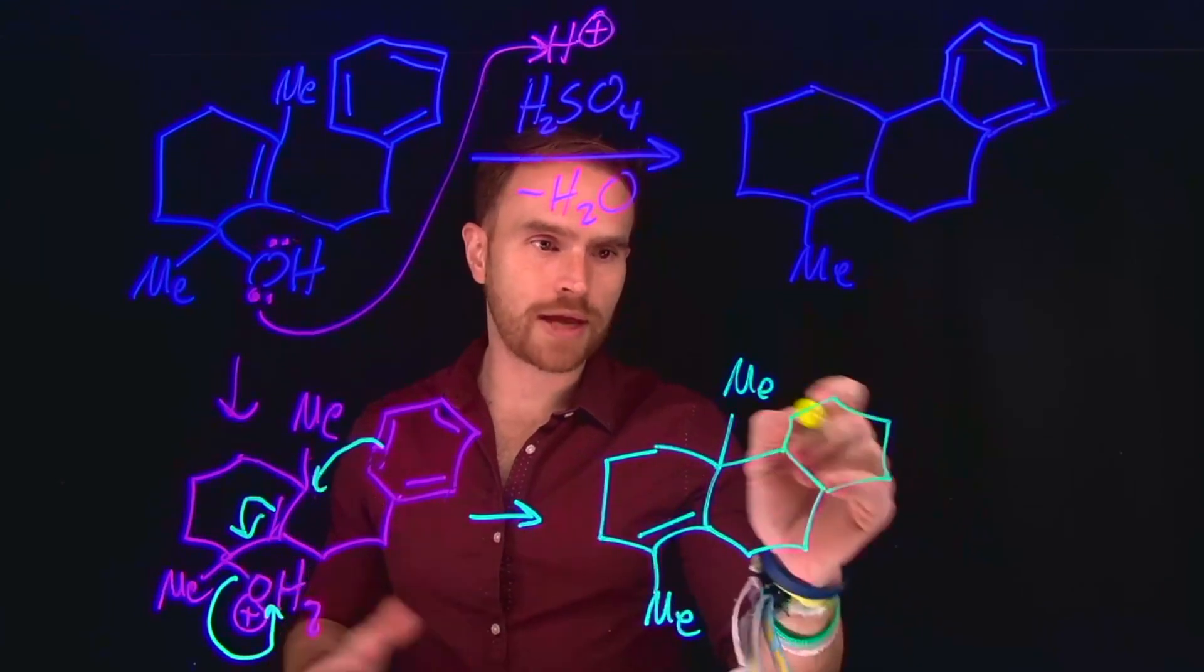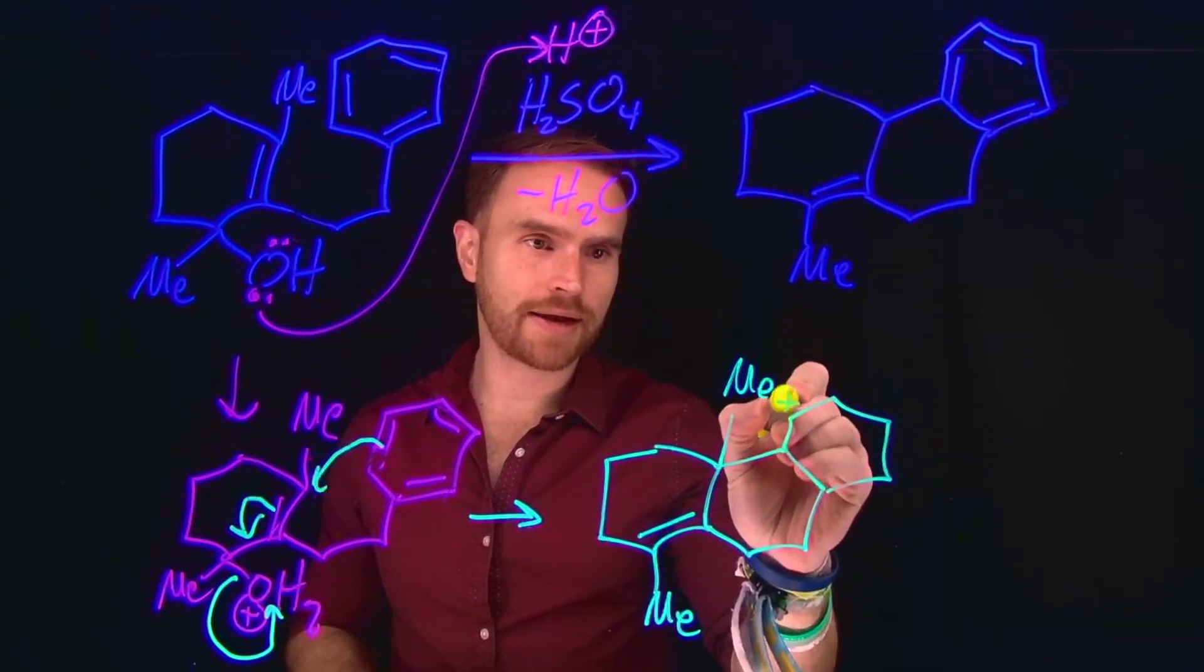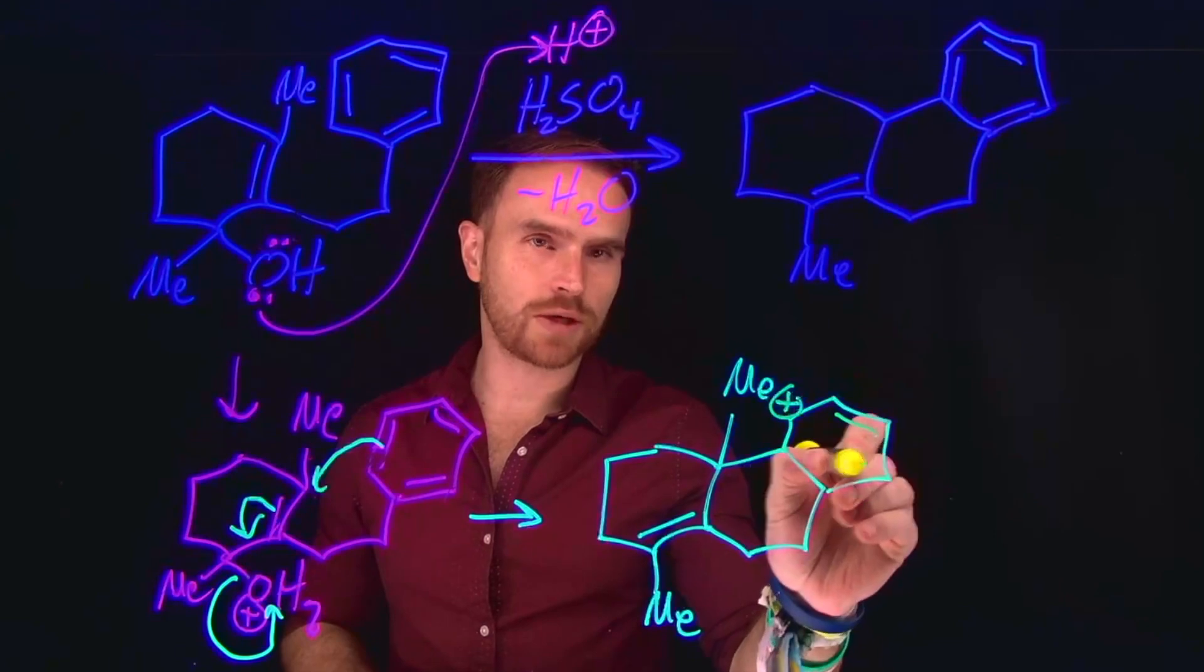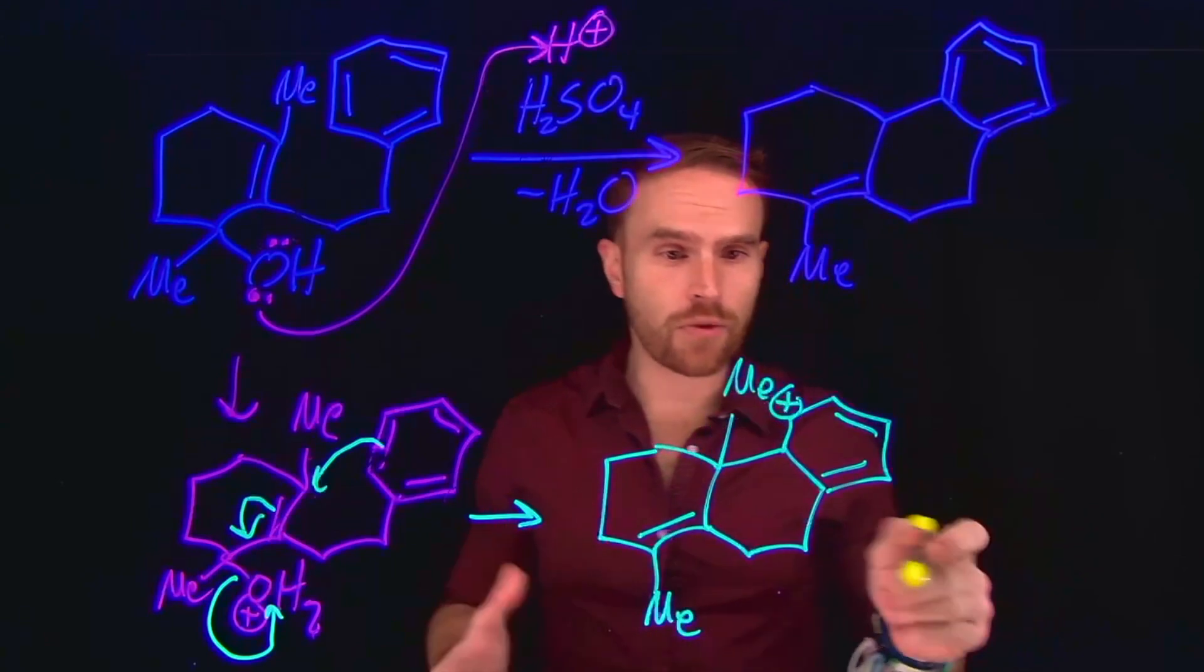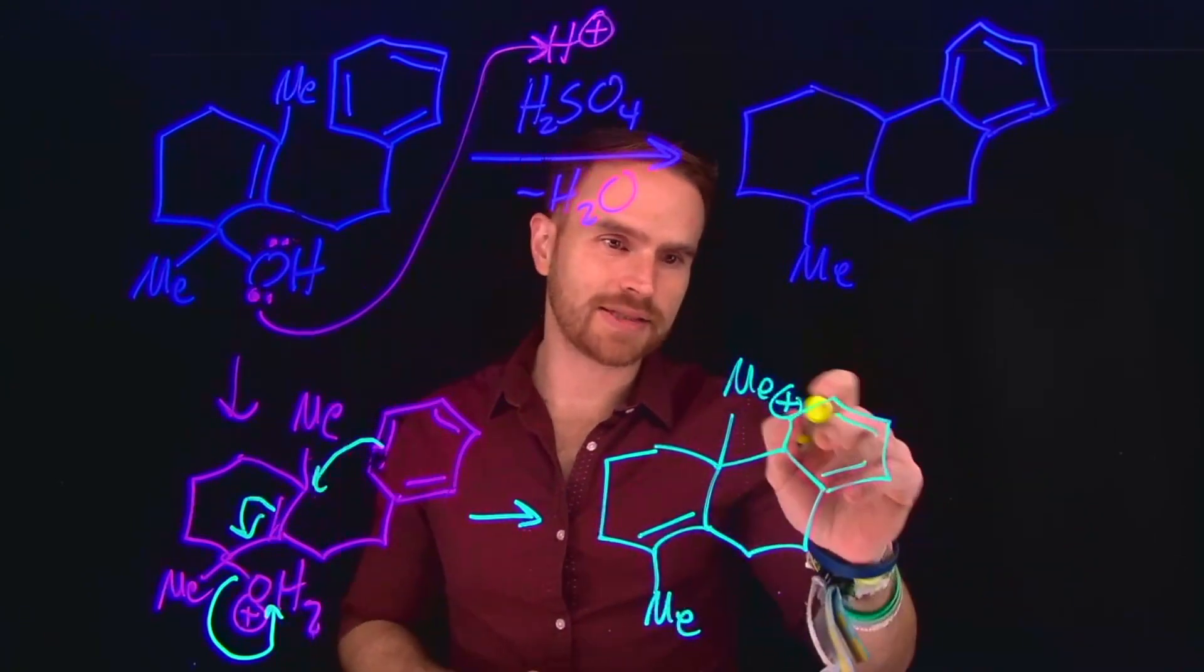Which means that what we have is a positive carbocation at this position, since we were using these pi electrons to do the electrophilic aromatic substitution. And then all that remains is to re-aromatize this second ring.